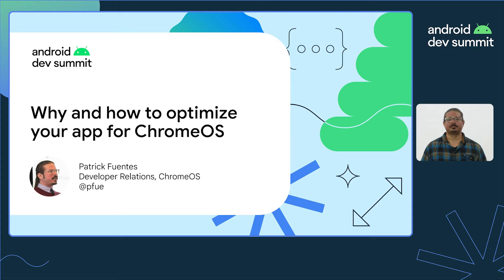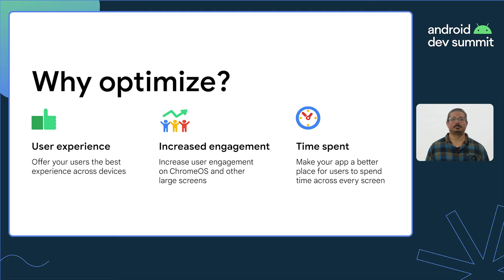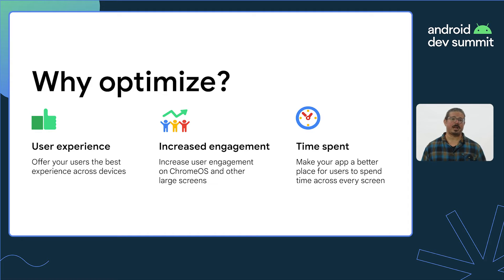Hi, everyone. My name is Patrick Fuentes from the Chrome OS Developer Relations team. Today, we're going to give a brief overview of why and how to optimize your Android app for Chrome OS. Millions of Android apps run on Chrome OS devices today, and if your app is already available in Google Play, there's a good chance that it's one of them. We've heard from developers who've already optimized for Chrome OS that they've seen increases in engagement and time spent in their apps.